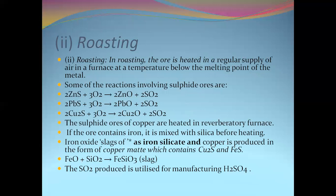Another method is roasting. Roasting is done to convert especially non-oxide ores to oxide ores. The ore is heated strongly in the presence of excess air. Non-oxide ores such as sulfide ores are converted into oxide ores. For example, zinc sulfide is converted to zinc oxide, lead sulfide is converted to lead oxide, and copper sulfide is converted to copper oxide. For copper oxide, the process is done in a reverberatory furnace because it contains iron. To remove iron, the ore is mixed with silica, and iron is removed as iron silicate, which is the impurity.